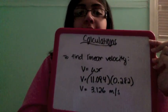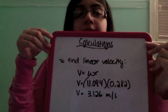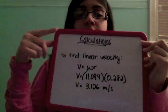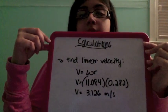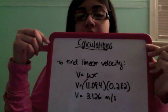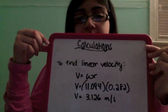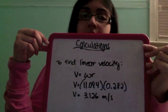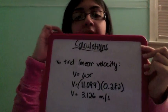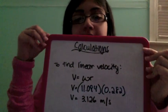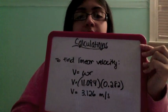Earlier in the video, we found that the radius was 0.282 meters, so we'll be using that number to find the linear velocity. The formula for linear velocity is omega times radius, or angular velocity times radius. We plugged in those numbers and found that the velocity is 3.126 meters per second.